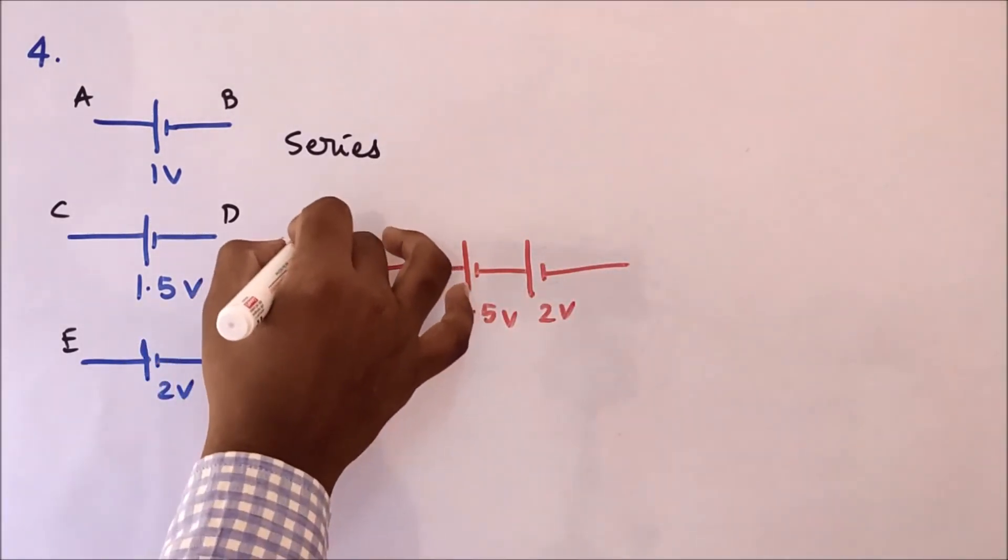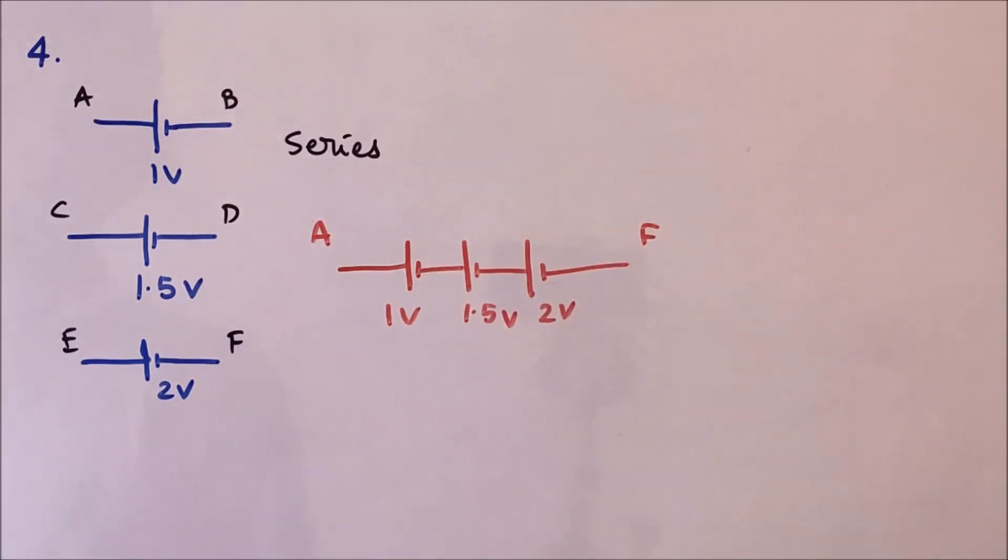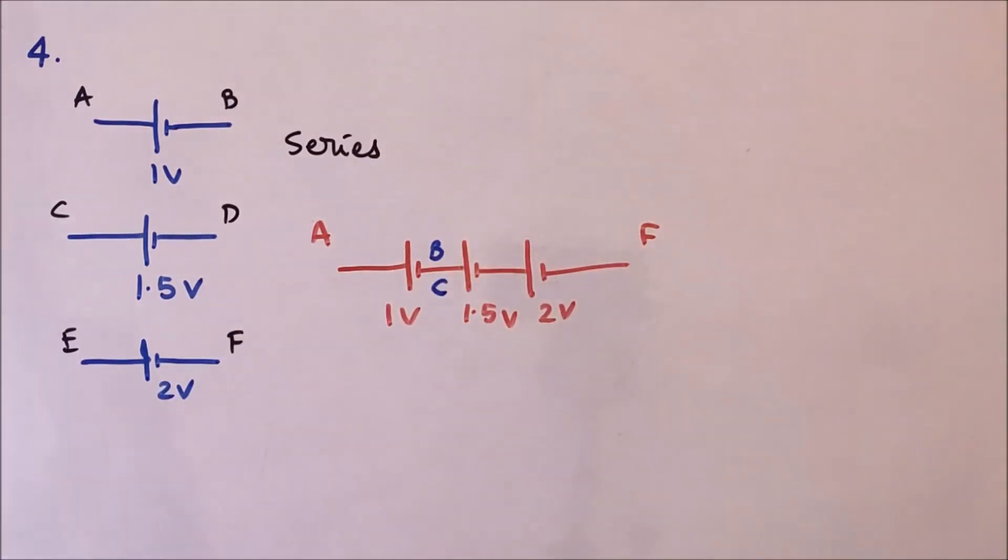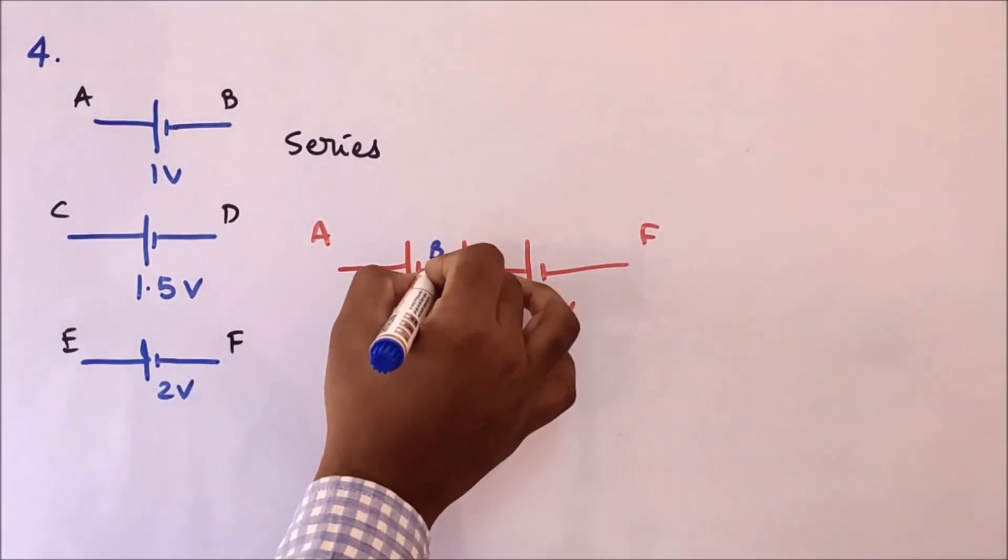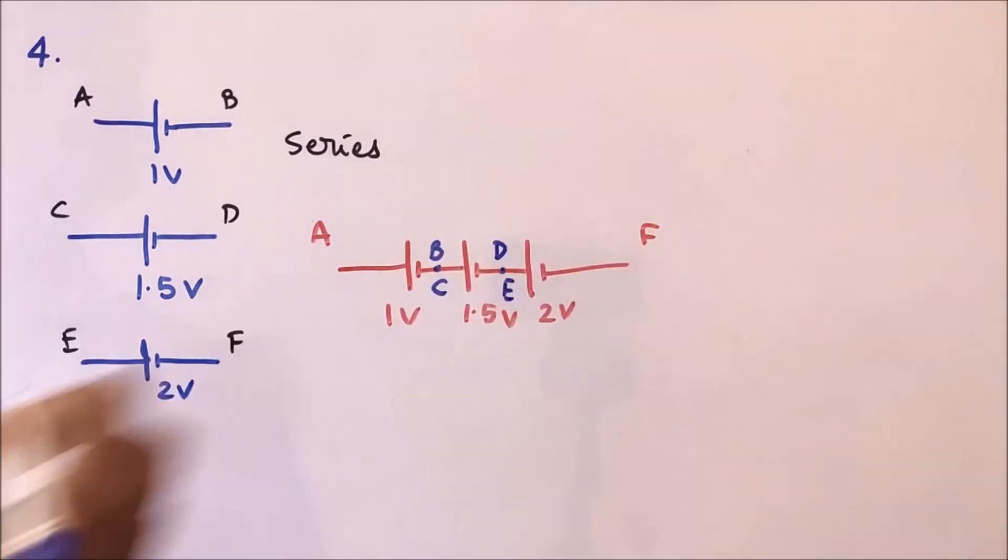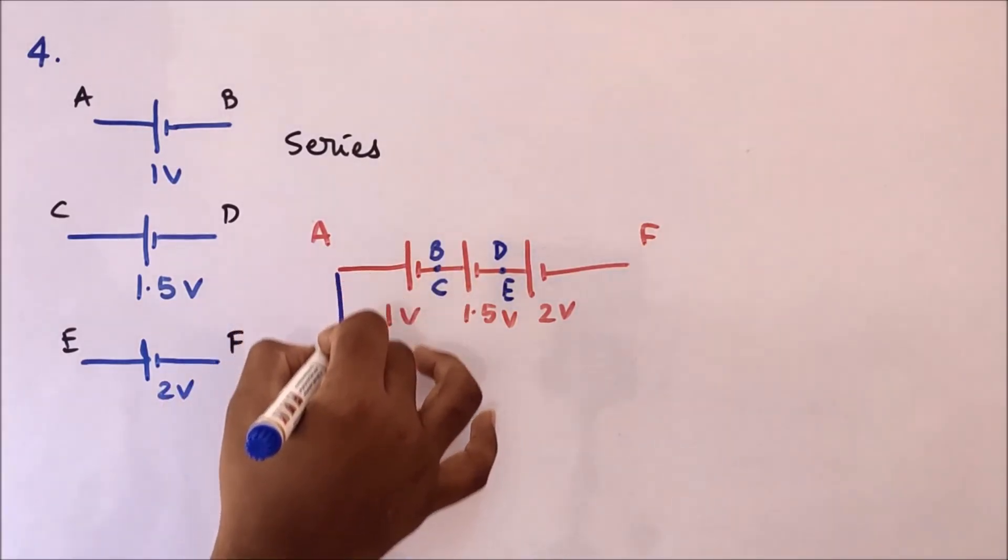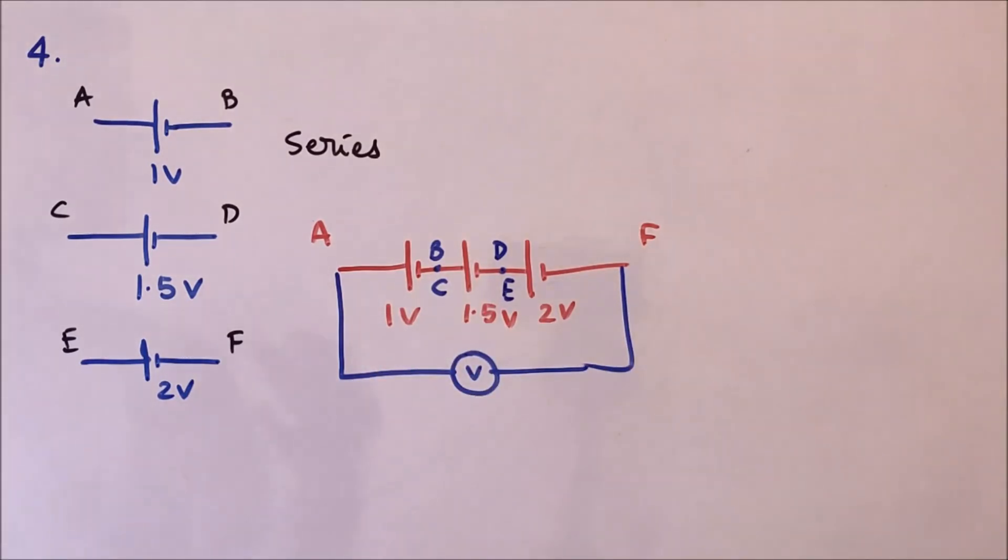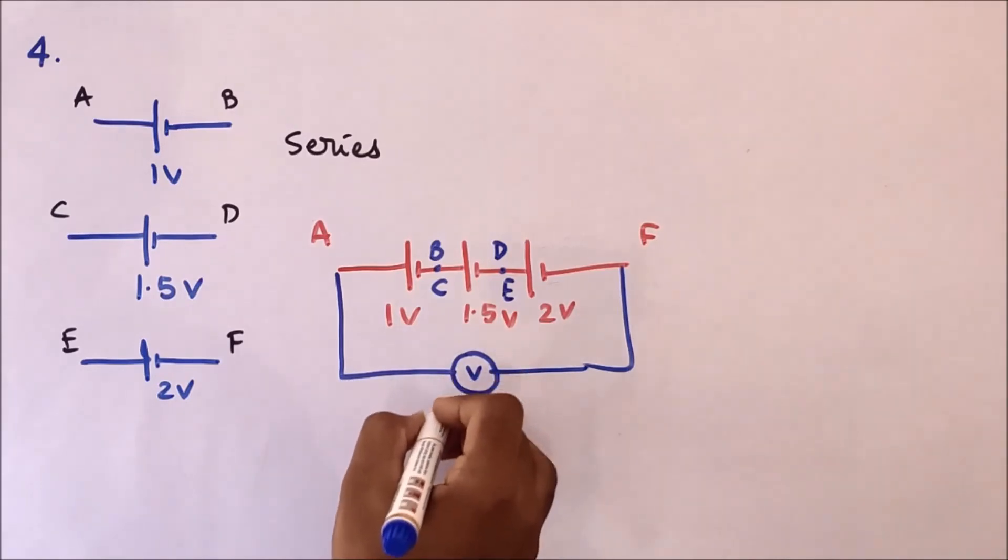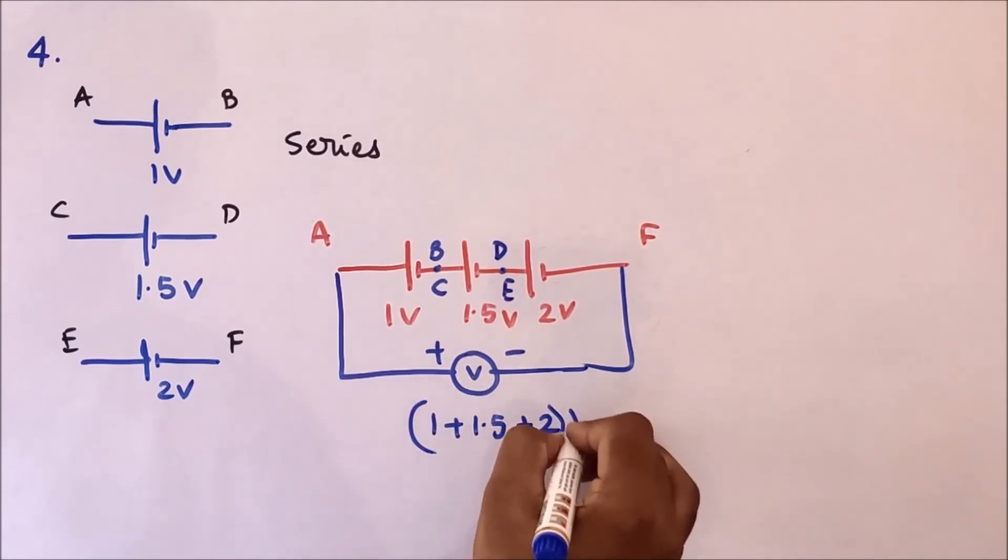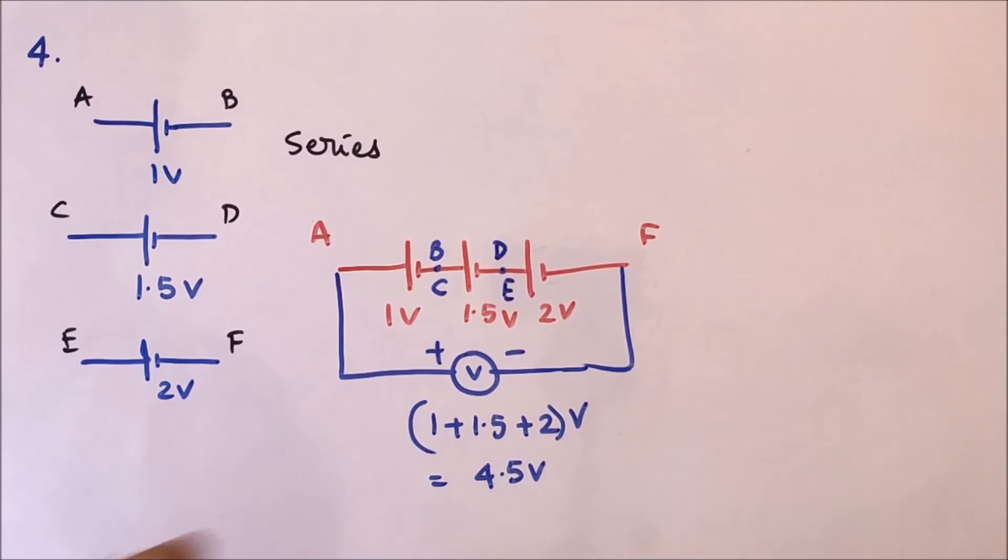So the terminal ends are going to be A and F, right? I need to join B here, B and C here. Next to D, I have to connect E, and the other end is F. So if I measure the potential difference across this, what happens? The potential difference adds up. So the value which I get from the voltmeter is going to be 1 plus 1.5 plus 2 volts, that is 4.5 volts. Option B.